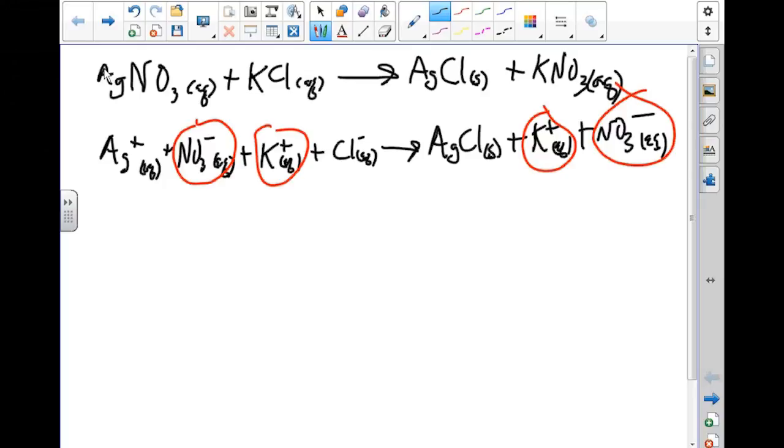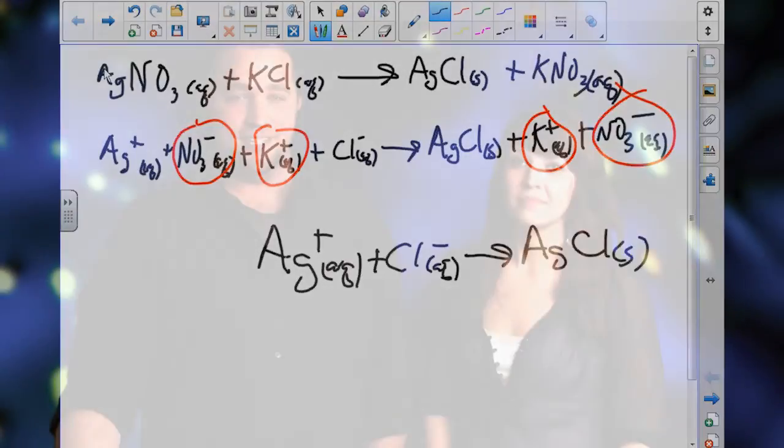For the net ionic equation, we just want to write down what makes the solid. We're going to write down our Ag⁺, and it's aqueous, plus our chlorine, also aqueous, and it goes to our solid. That covers net ionic equations. And who said chemistry wasn't fun? Thank you for watching.